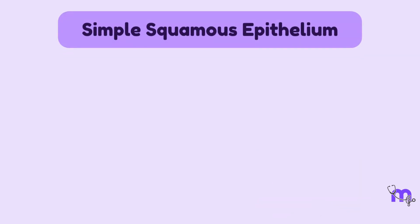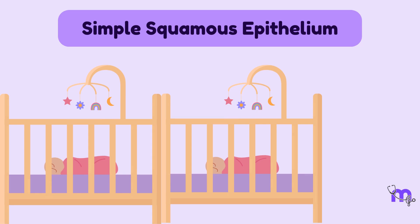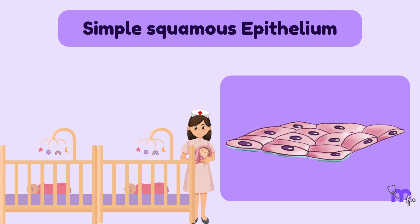Let us now study the three types of single-layered or simple epithelia. Simple squamous epithelium is like a row of sleeping babies in a neonatal ward, about the same size, wrapped in similar-looking cloth, laying flat on their backs. The epithelium, too, is a single layer of flat, polygonal cells that rest on a basement membrane.